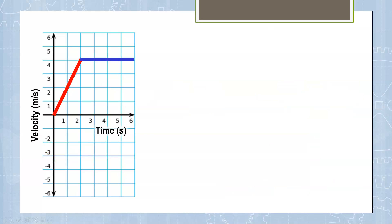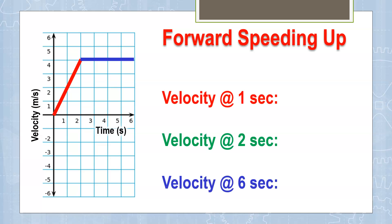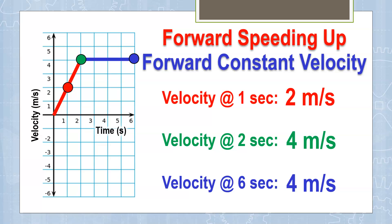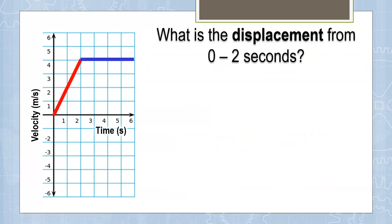Now we'll look at two different motions on a velocity versus time graph. We're going forward in both because we're above the axis in both. I'm speeding up and then moving at a constant velocity. At one second, I'm at two meters per second; at two seconds, I'm at four meters per second. At six seconds, I'm still at four meters per second — for that second motion I'm moving at a constant forward velocity. Between one and two seconds I confirmed I was speeding up; between two and six seconds I did not change velocity.